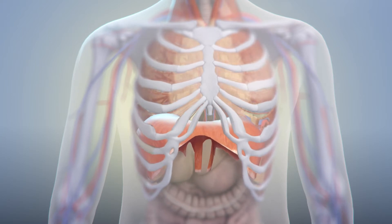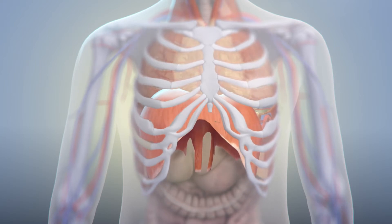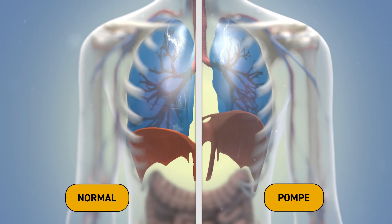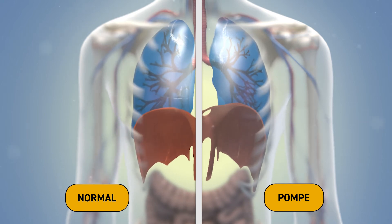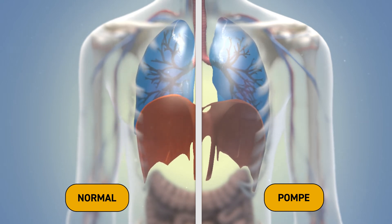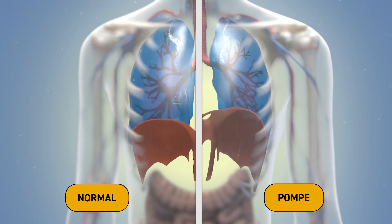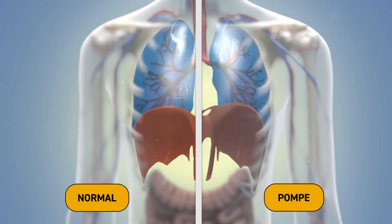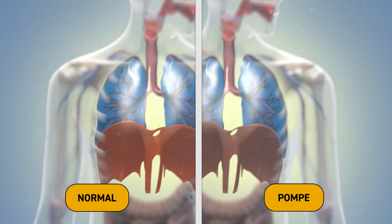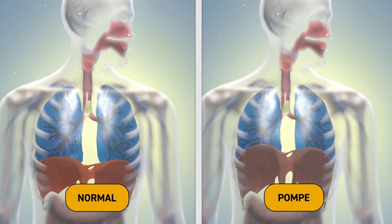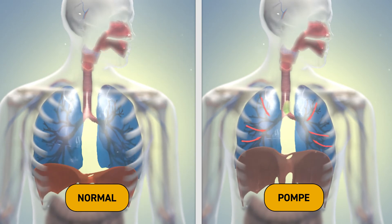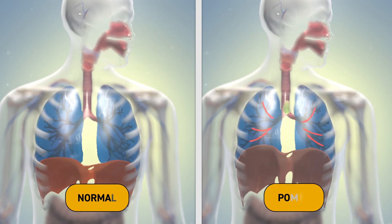Weakness of the diaphragm is believed to be the main cause of respiratory dysfunction in LOPD and can begin early in the disease process, sometimes prior to obvious impairment in mobility. Decreased diaphragm strength contributes to reduced vital capacity, particularly when lying down. Performing both upright and supine pulmonary function tests can help identify early diaphragmatic weakness.